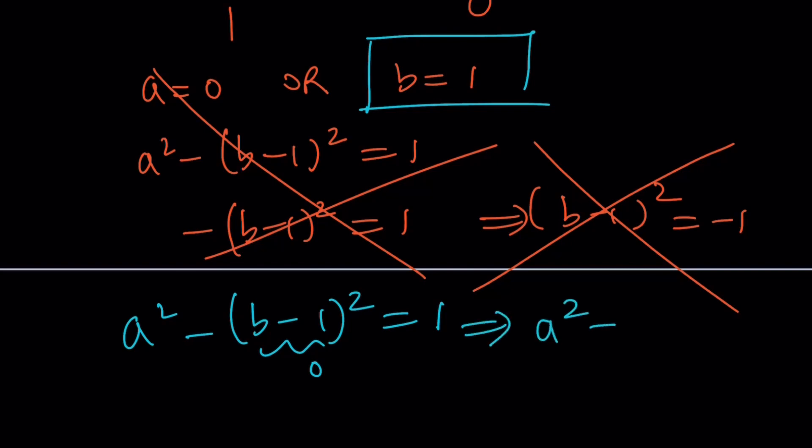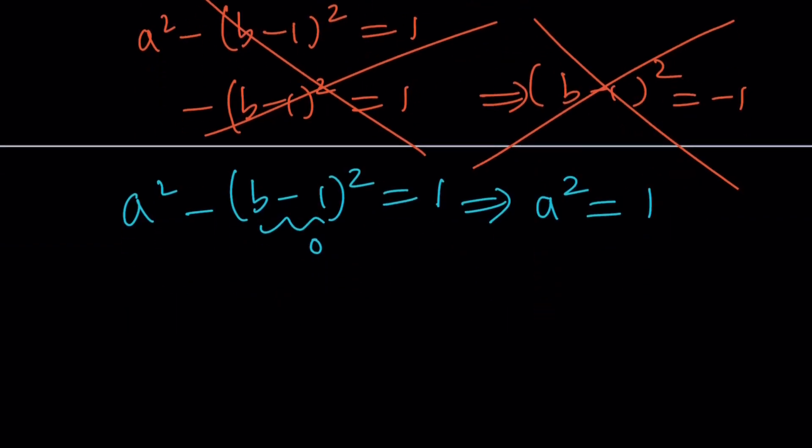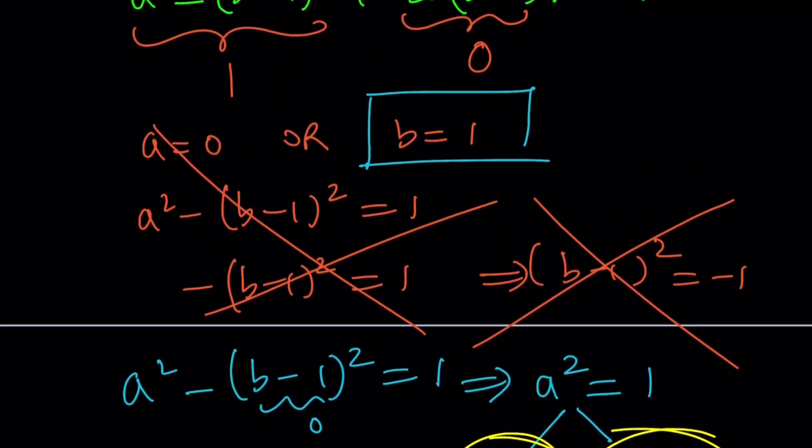And this gives us two solutions. As you know, a is a real number. There are two numbers whose square equals one. And those numbers are one and negative one. That means we have two options for a, but only a single option for b.